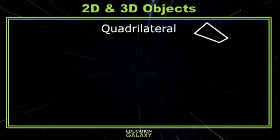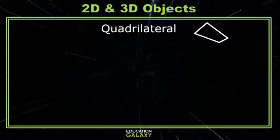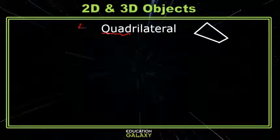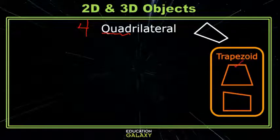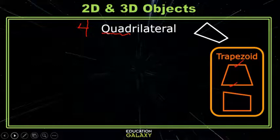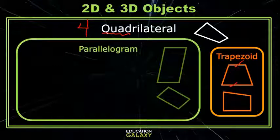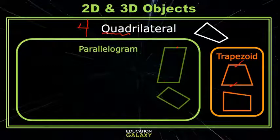Let's go deeper with quadrilaterals. Remember, a quadrilateral is a shape with four sides. Quadrilaterals with one pair of parallel sides are called trapezoids. If a quadrilateral has two pairs of parallel sides, then it is called a parallelogram.